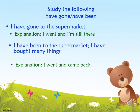Study the difference between have gone and have been. I have gone to the supermarket means I went and I'm still there — I haven't come back. But I have been to the supermarket means I went and I came back. So the difference is: have gone means you went and are still there, while have been means you went and came back.